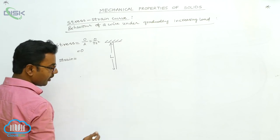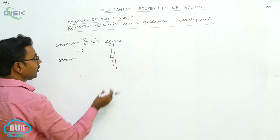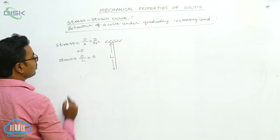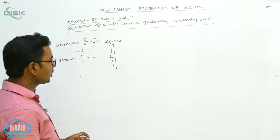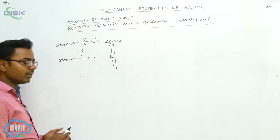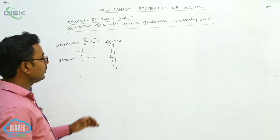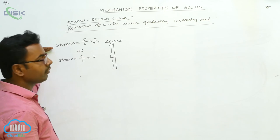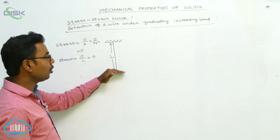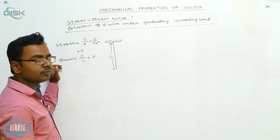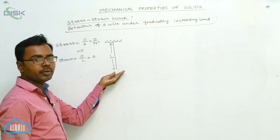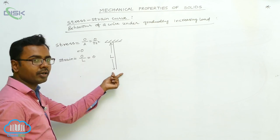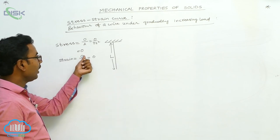When a load is attached, it produces tensile strain, which means increase in length divided by original length. When no load is attached, there is no increase in length, so strain equals zero. What we are doing is suspending different amounts of load and correspondingly calculating stress and strain values. For example, initially we suspend a hundred-gram load, and for that load we calculate the stress and also calculate the elongation.